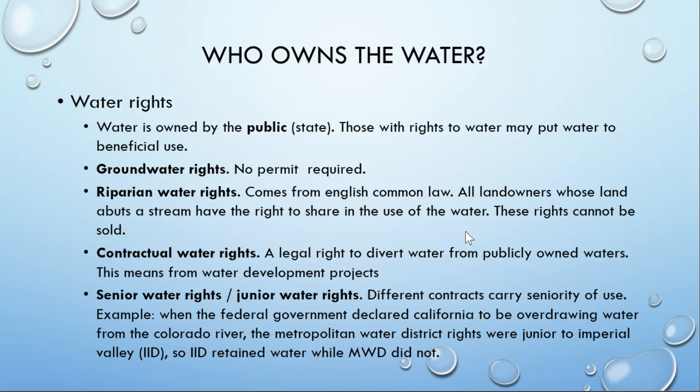Regarding who owns water: everybody has access to groundwater. Anyone who touches a stream, lake, or river has access to it. You can also buy water rights from publicly owned waters or from people who own river rights. If two parties are both on the river, who has the most right to it is usually decided by courts.